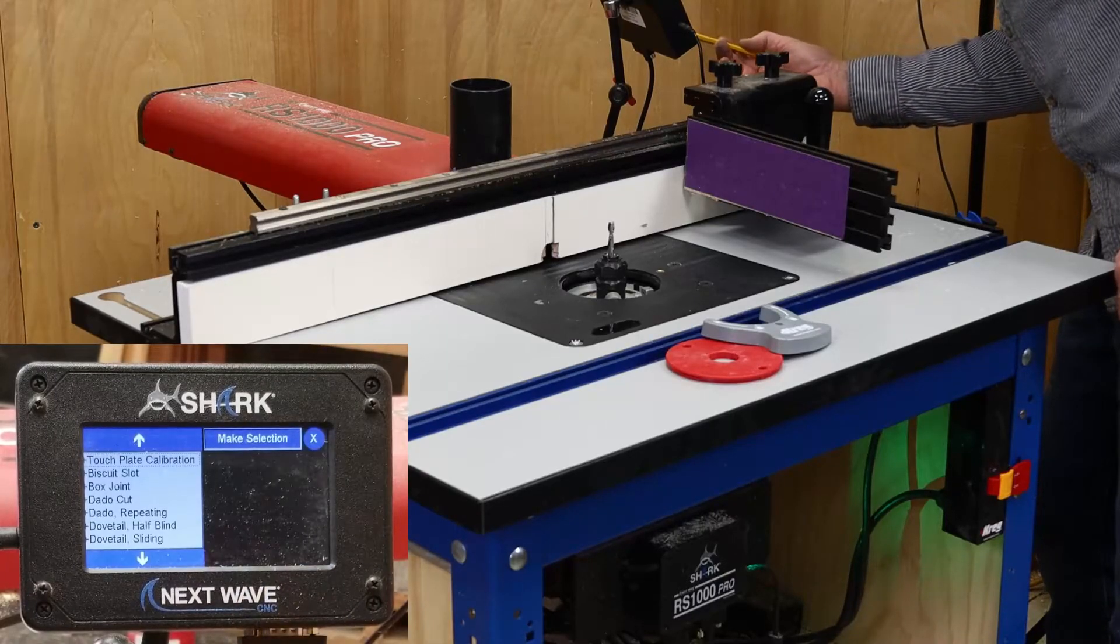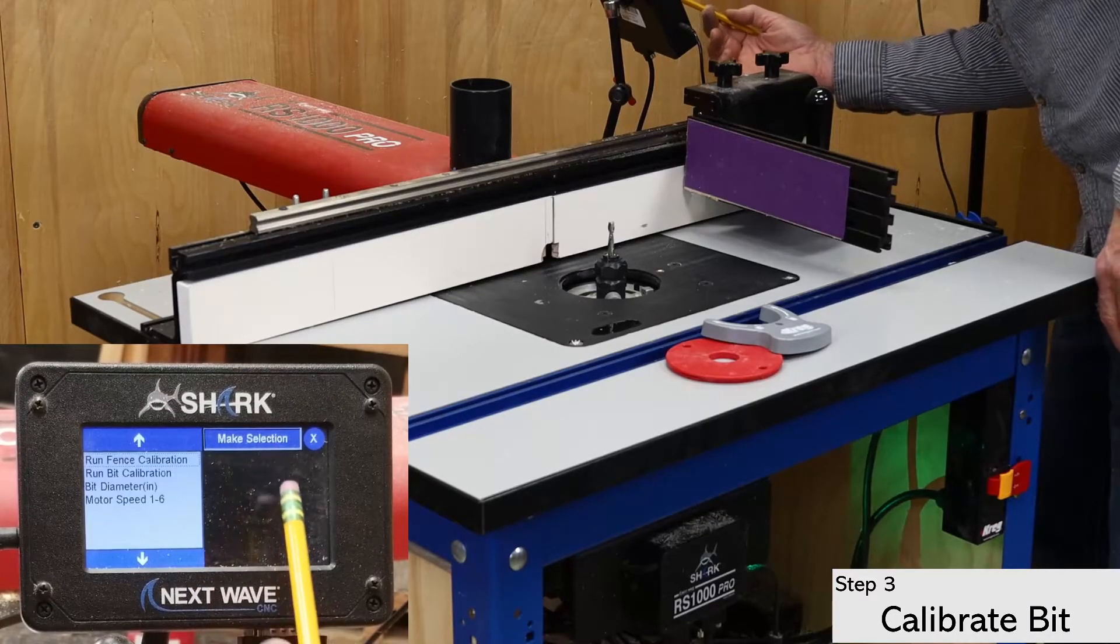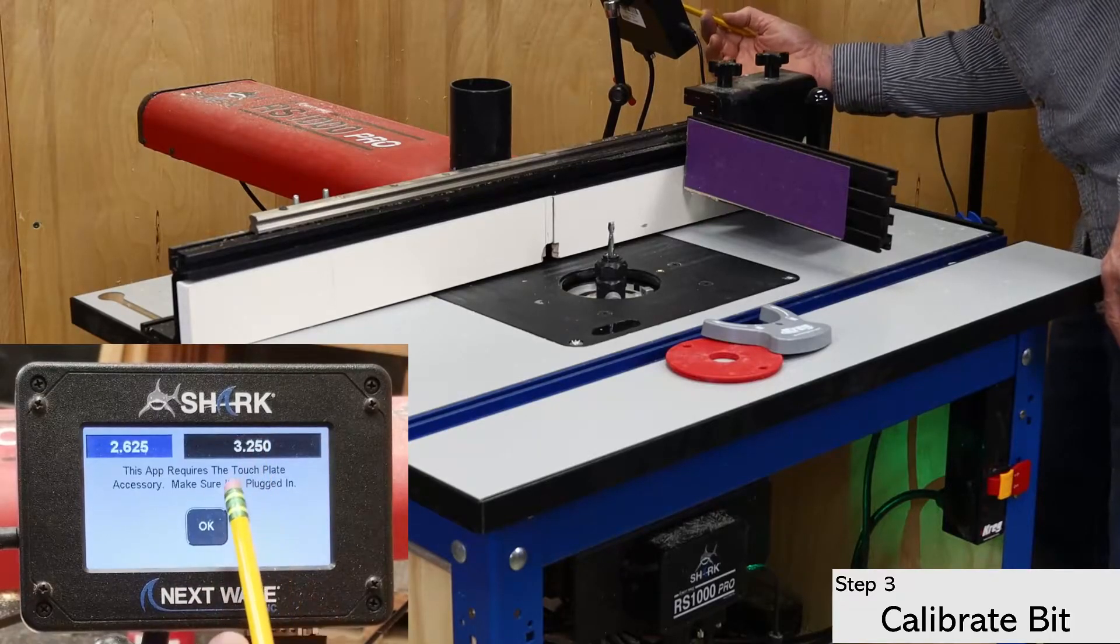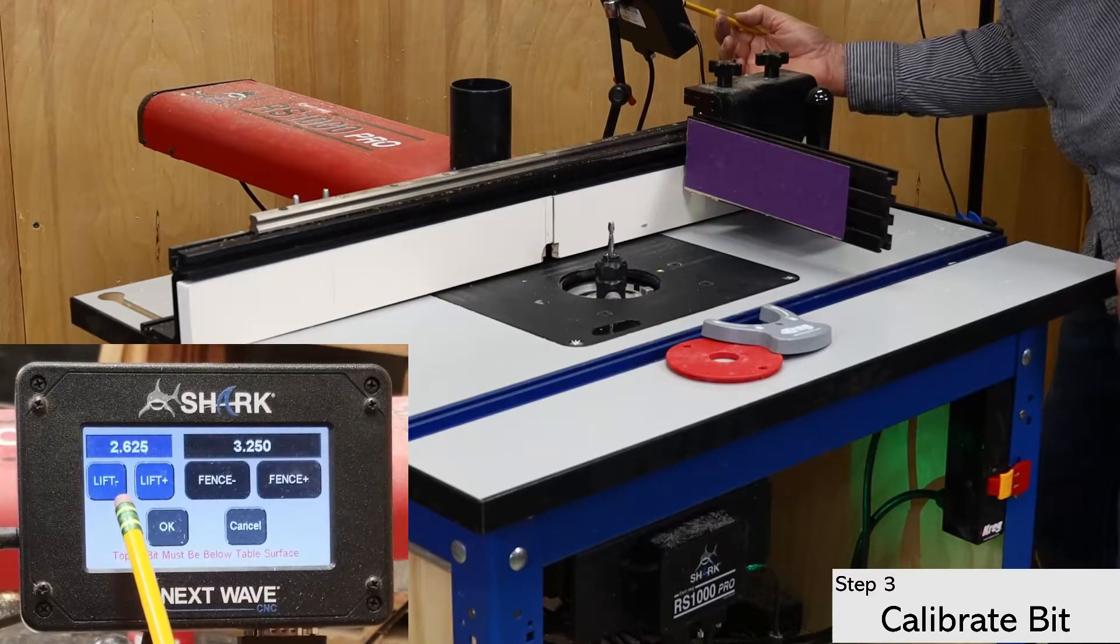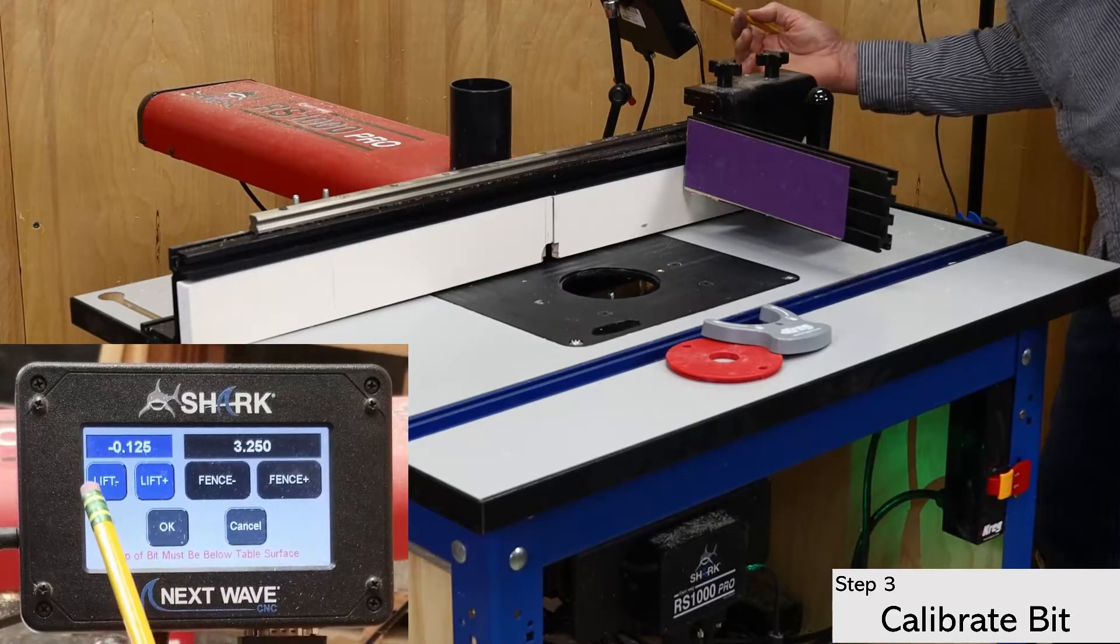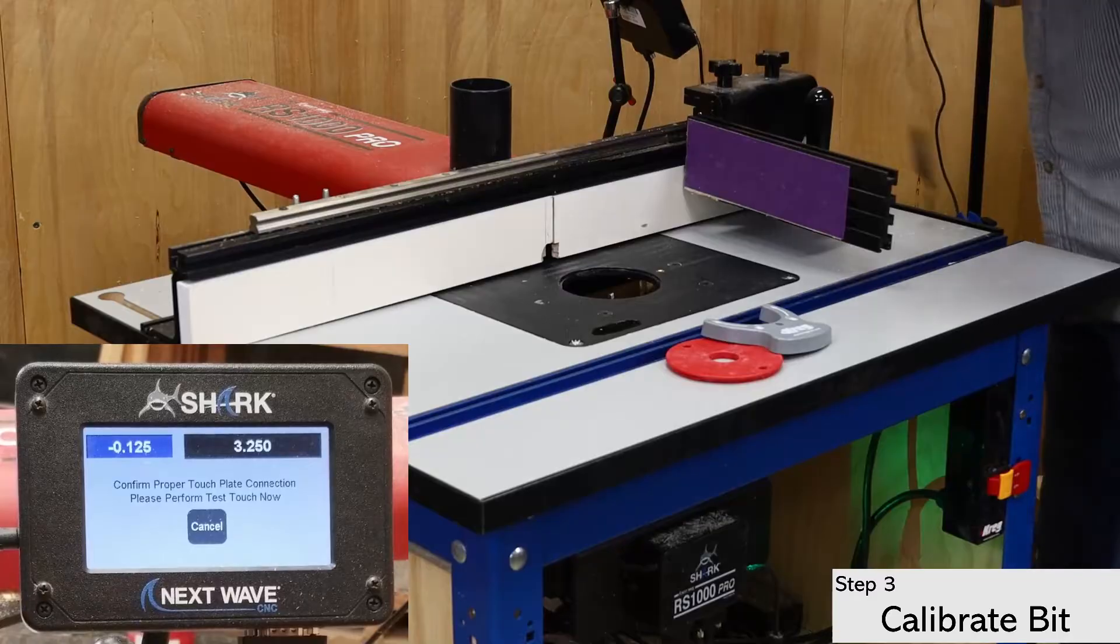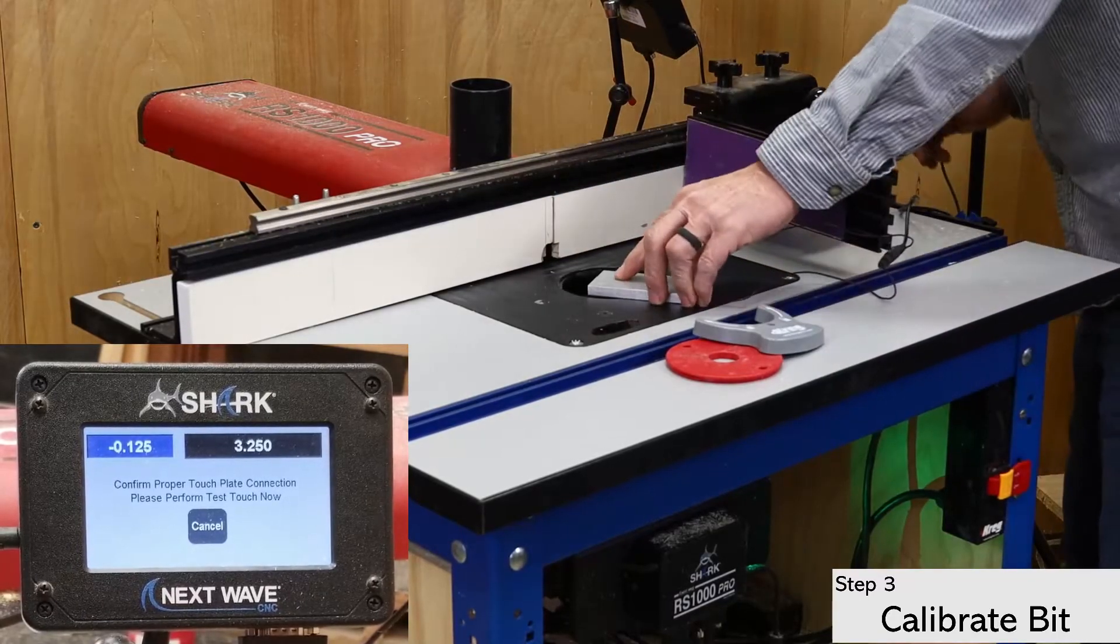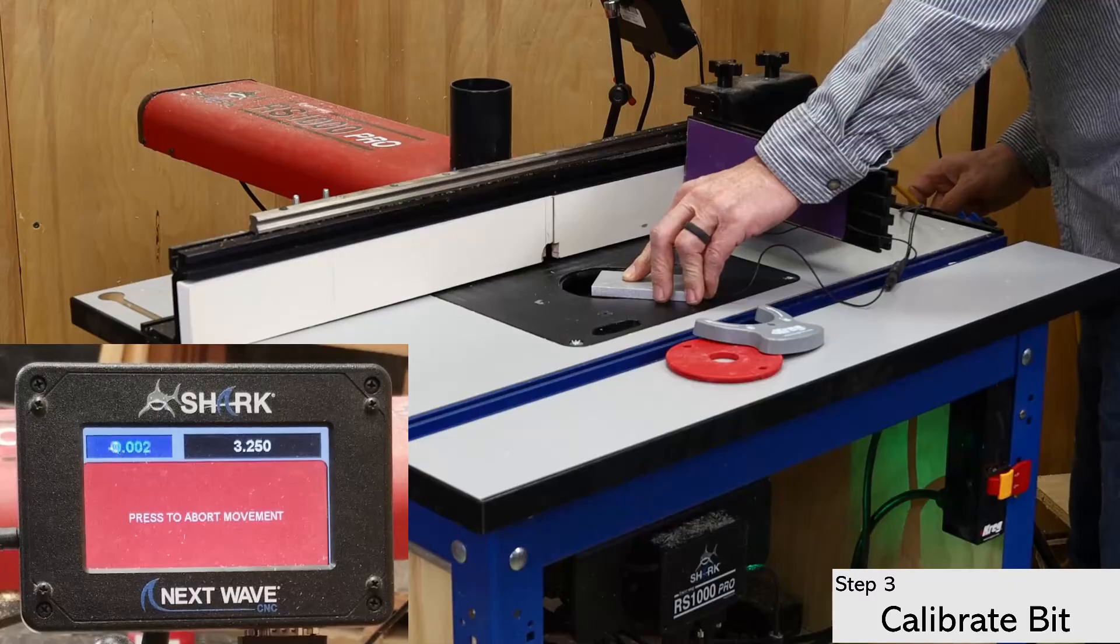Next, open the apps menu and select the touch plate calibration and then click on bit calibration. Click through to the white control button and use the buttons to lower the bit below the table. Now connect the magnet to the router bit or the collet. Touch the plate to the bit to verify that you have a good connection.